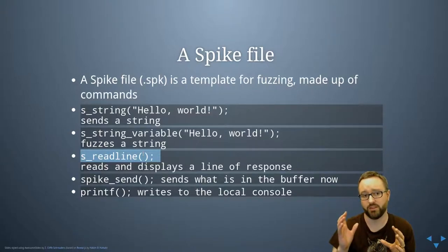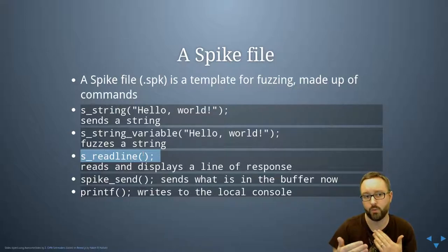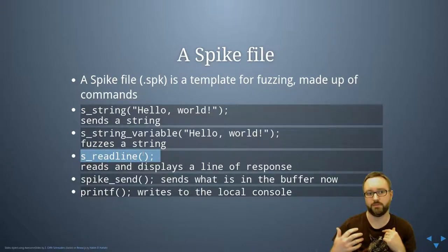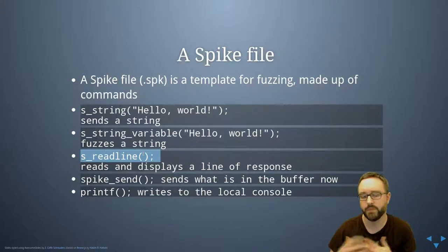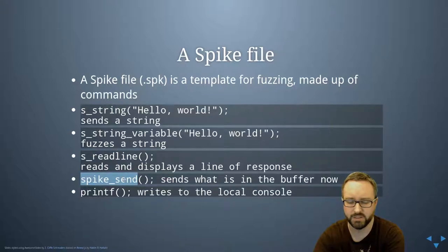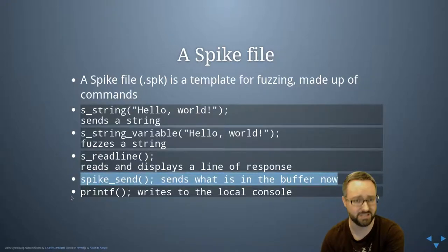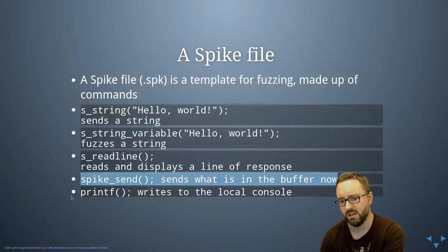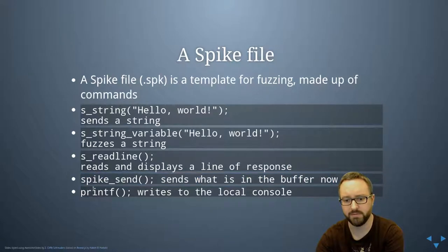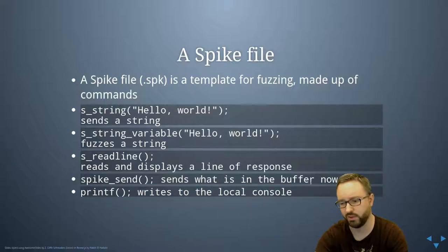Spike can apply for both local software interacting via standard IO or over a network protocol. Either way, it will wait to receive something back from the server or for the program to output something. spike_send clears the buffer, which is helpful for networking to force it to actually send the result. printf prints to the local console so you can show local debugging information.